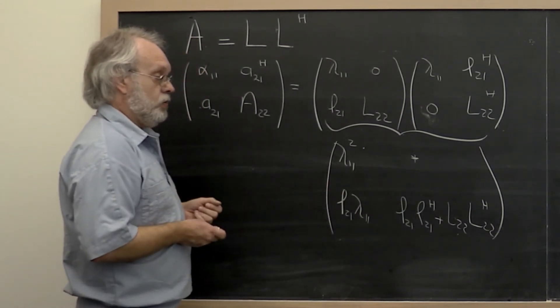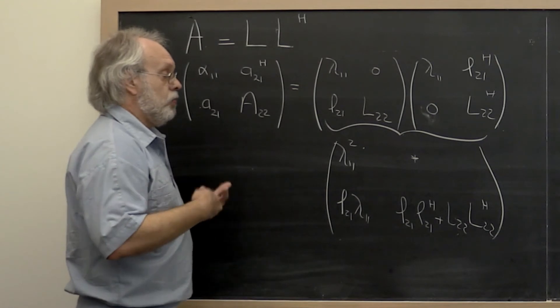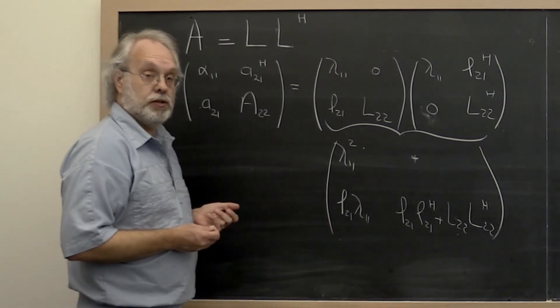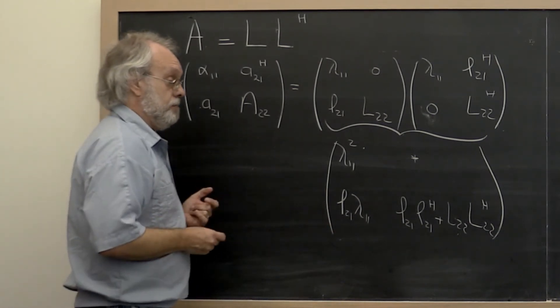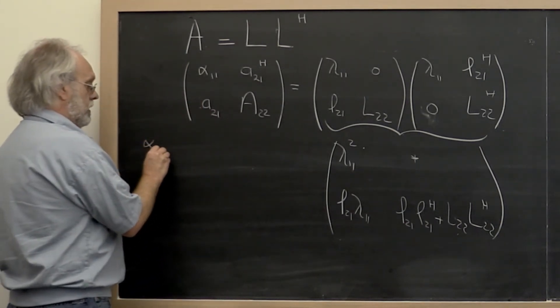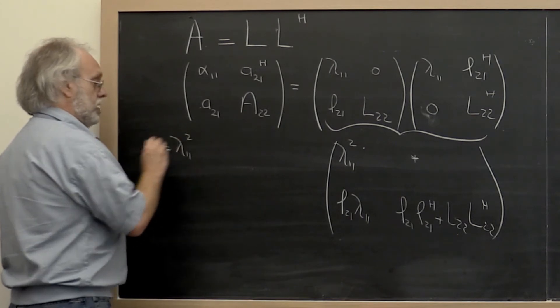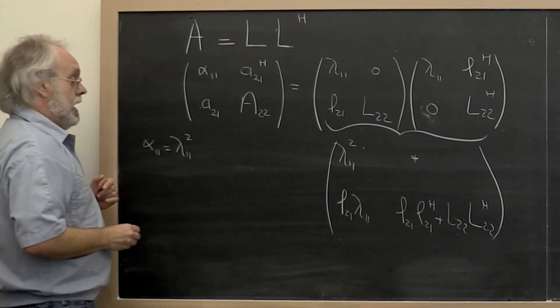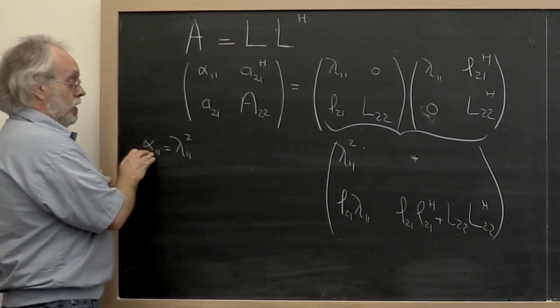And from that we can read off what the operations are that must happen in the current step and in the future. Namely, we know that alpha_1,1 is equal to lambda_1,1 squared. And we know what alpha_1,1 is.